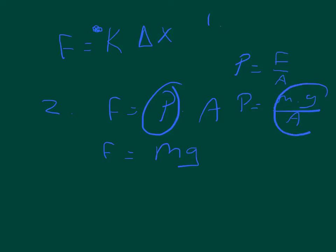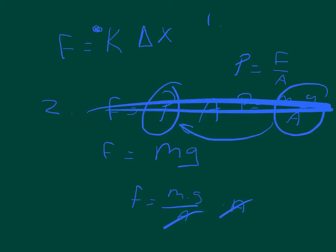And so whenever you take this equation and you plug it in here, your area, so you end up with force equals mass times gravity over area times area, and these areas end up canceling each other out. So we're going to get rid of the pressure equation either way, so we're going to stick with force equals mass times gravity.